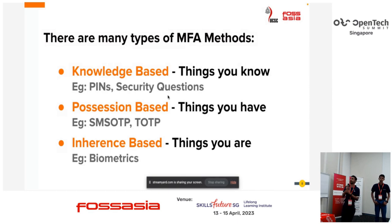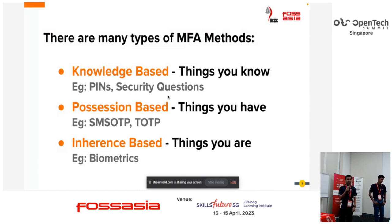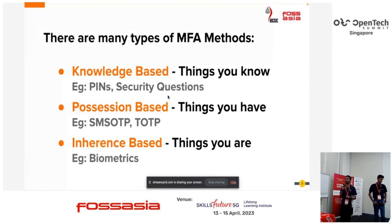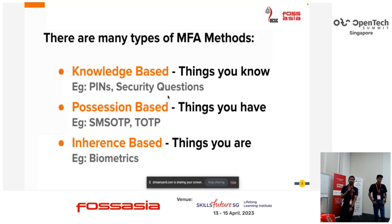The three most common MFA types are: first, knowledge-based — something you know, such as a PIN number or security questions; second, possession-based — something you have, such as HOTP and TOTP codes; and third, inherence-based — something you are, such as biometrics.